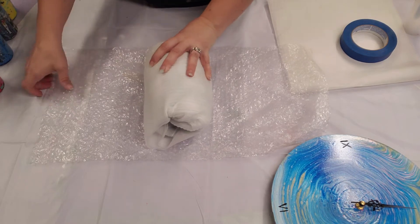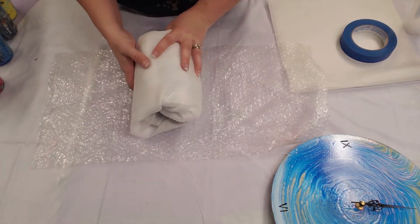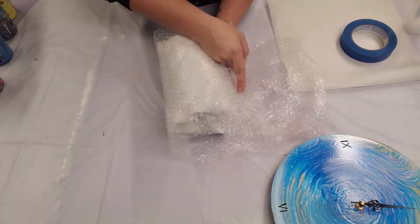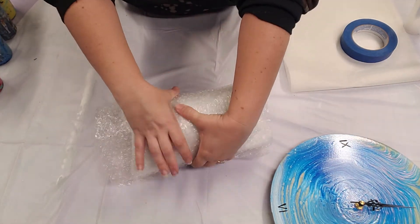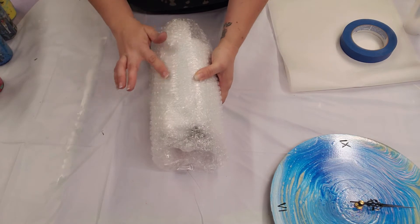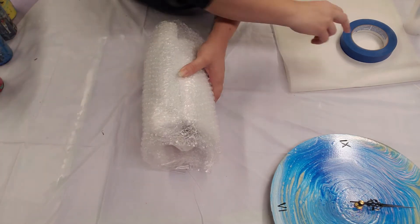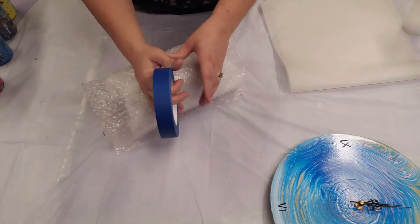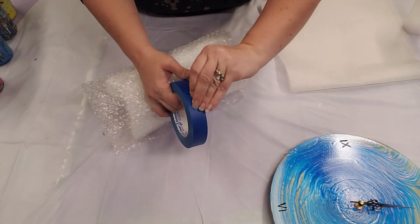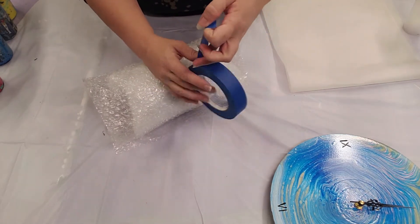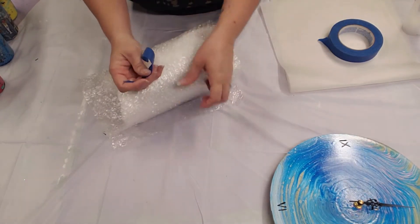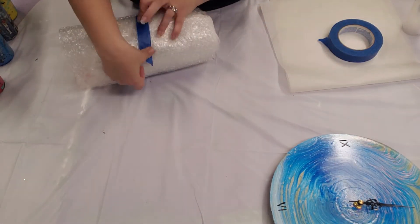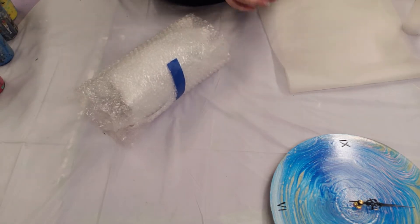And then we're gonna wrap it in bubble wrap. This may be overkill but I don't want to have to worry about it. So wrap it in some bubble wrap, and I always, no matter what I'm wrapping, I put the bubble side on the outside. And then we're just gonna add a little tape. You can use packing tape. I'm gonna just use this blue tape because it's what I have right here.